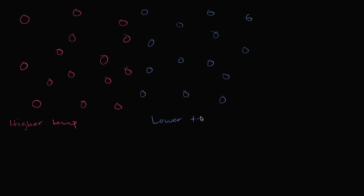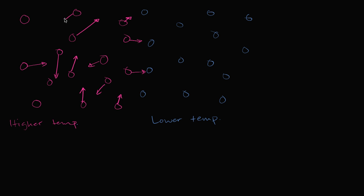Let's remind ourselves what temperature is, especially if we think about it on a molecular scale. Temperature is proportional to average kinetic energy. These molecules are going to be vibrating and bumping around, each of them having kinetic energy. When you average them, that's proportional to temperature. Each individual molecule has a different direction and the magnitude of their velocity can be different — they all might have different speeds.